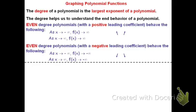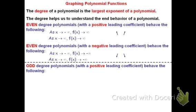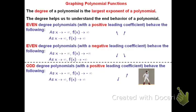If instead it's an odd degree polynomial, then the end behavior is going to go in different directions. As x goes to negative infinity, f will go to negative infinity, provided that you have a positive leading coefficient. If x goes to positive infinity, then f also goes to infinity, meaning you get a graph looking like this.